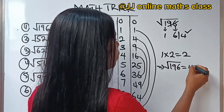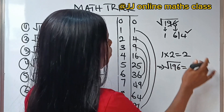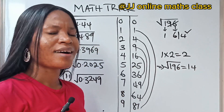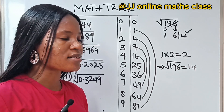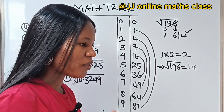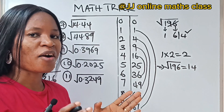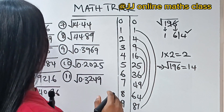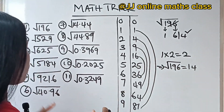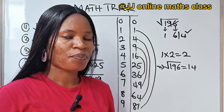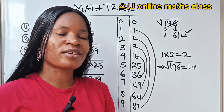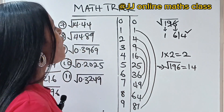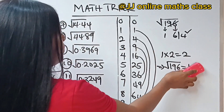So the square root of 196 is 14. Continue watching and you'll understand the whole process more clearly as we work through more examples.